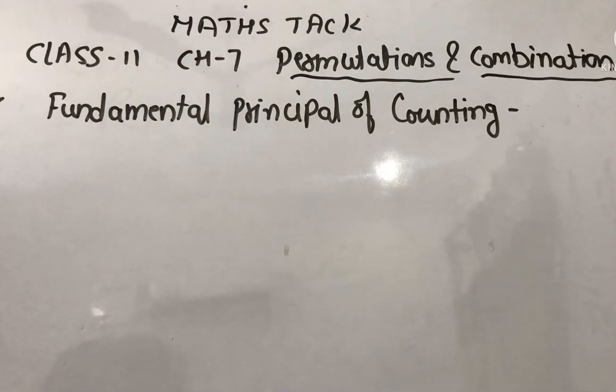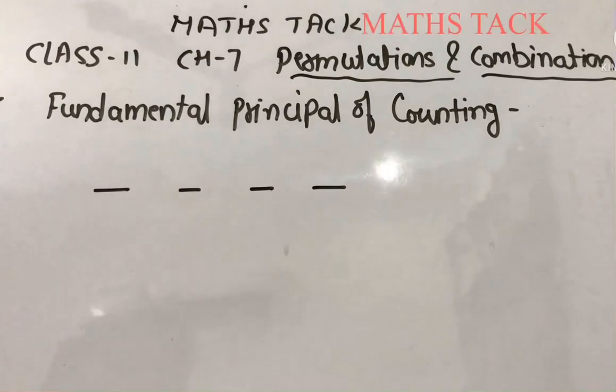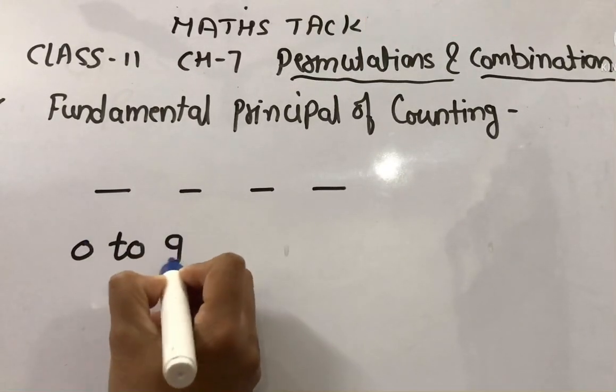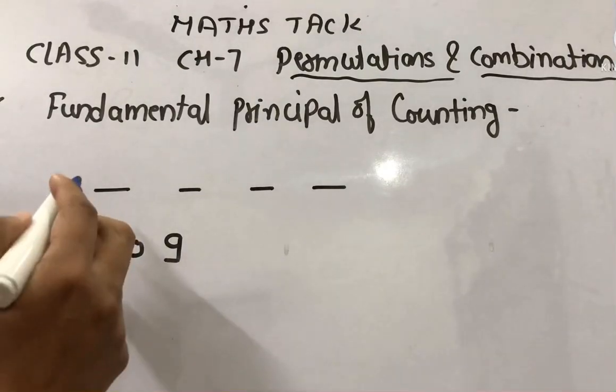have a suitcase with a 4-digit number lock using digits 0 to 9 without any repetition. Somehow you forgot the number lock and only remember that the first digit was 7. Now you have to find that number lock by taking three digits at